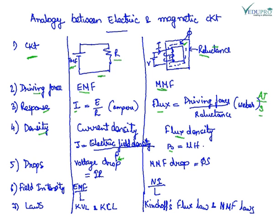Drops: in electric circuit the drop is IR voltage drop, and in a magnetic circuit it is MMF drop, and it is flux into S.